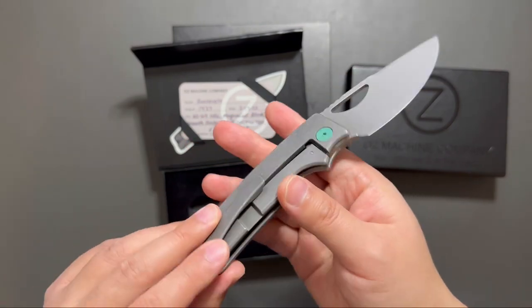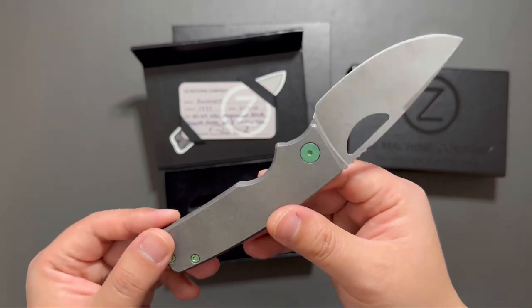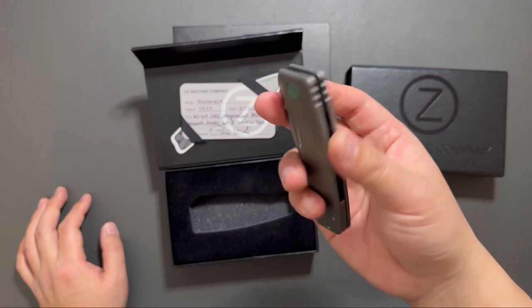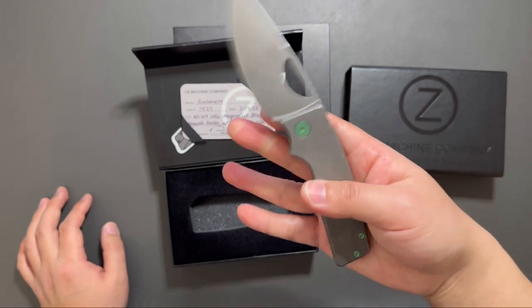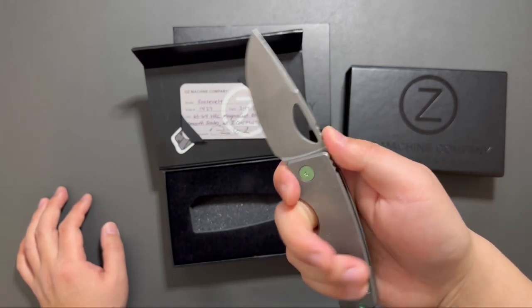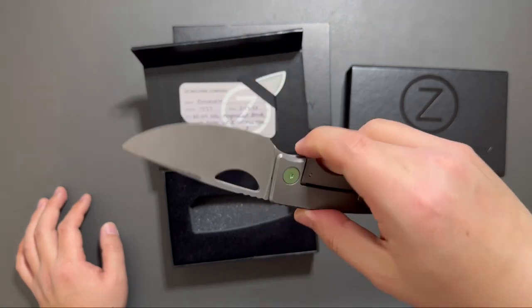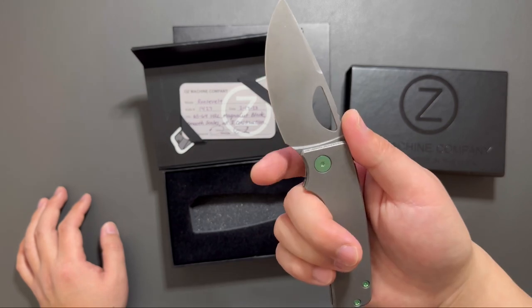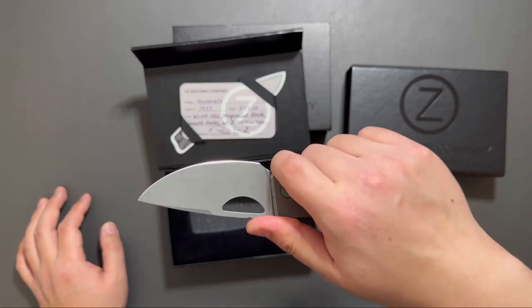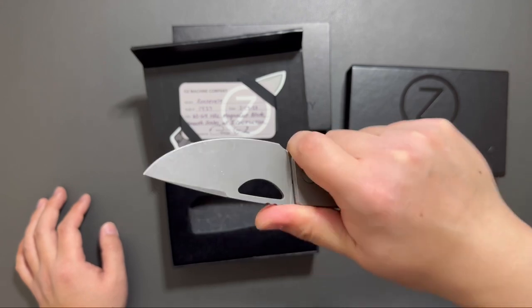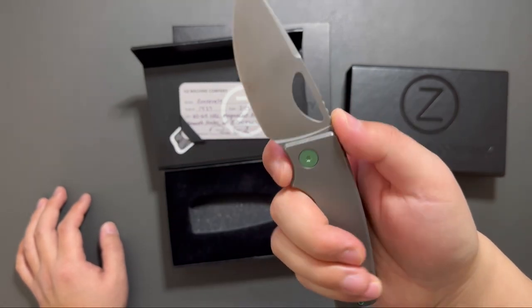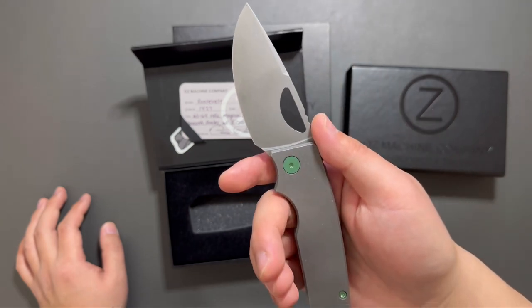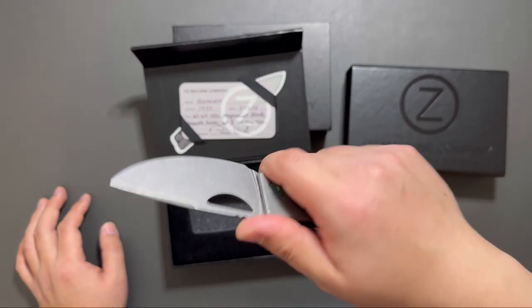Dark stonewashed blade and the scales look awesome. The ergo is perfect as well. This size is perfect for EDC and this finger choil works perfectly with your hand. I have a pretty small hand but I think it works for medium and large hands as well.